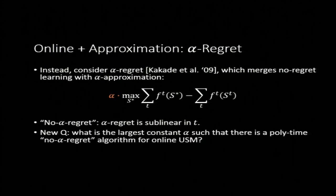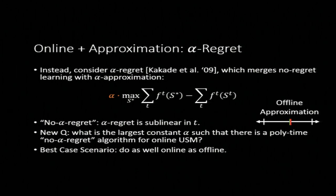Right. So the new question we have when we're studying alpha regret is, what's the biggest alpha where we can get a no-alpha regret algorithm? Just like for approximation algorithms, it's what's the biggest alpha where there's an efficient alpha approximation algorithm. And the really interesting question for not just the USM problem, but many problems like this one, is whether or not the alphas are the same for both the offline and the online cases. And I'll remind you that the offline answer looked like this: we could get one-half and we knew we couldn't do any better than one-half.